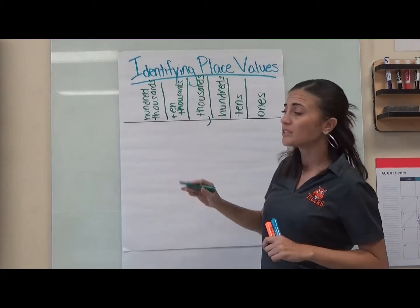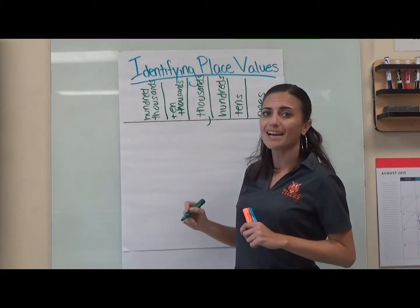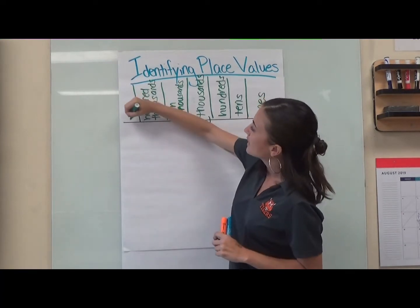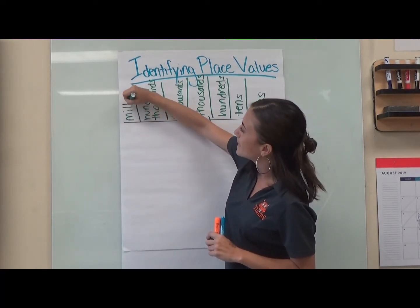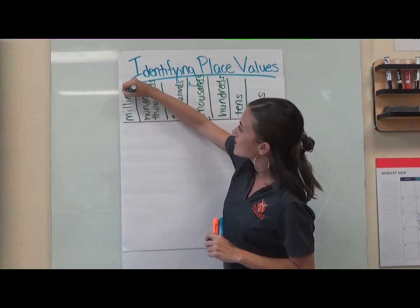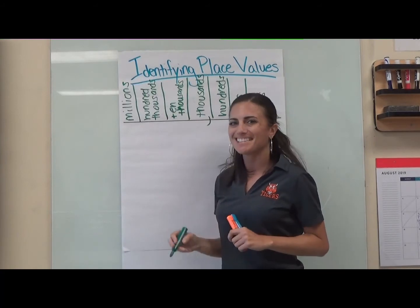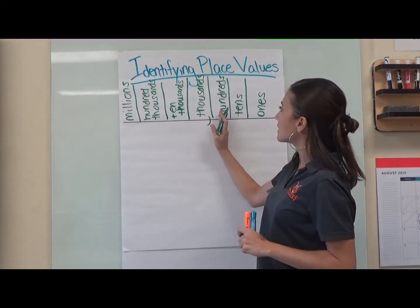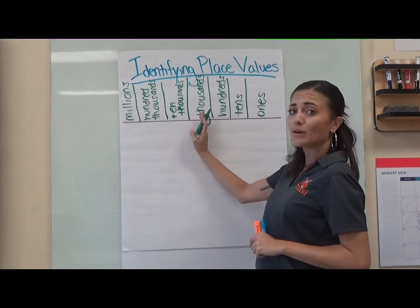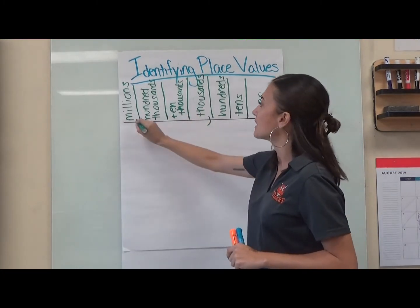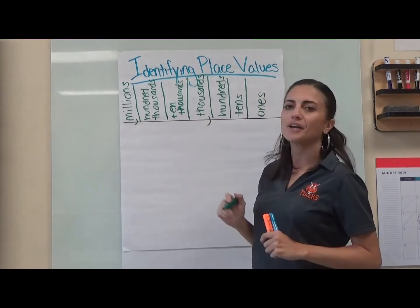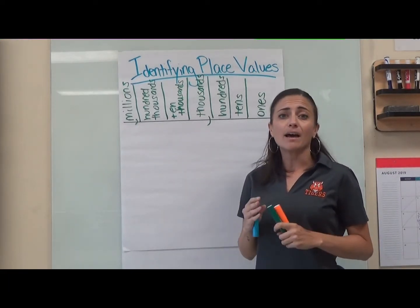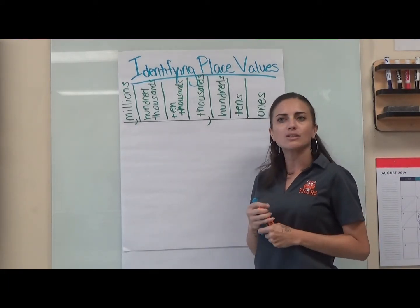So those are our new ones — we have our ten thousands and our hundred thousands. This year the biggest place value we're going up to is going to be our millions; we're getting into the big digits now. So we have our new place values: ones, tens, hundreds, comma, thousands, ten thousands, hundred thousands, comma, and our millions. Those are the place values we're going to be using this year.